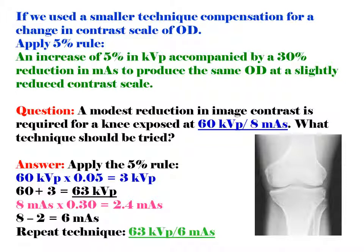Answer: Apply the 5% rule. 60 KVP multiplied by 0.05 equals 3 KVP; add to 60 KVP = 63 KVP. For MAS: 8 MAS multiplied by 0.30 equals 2.4 MAS, rounded to 2. So 8 minus 2 equals 6 MAS. The repeat technique is 63 KVP, 6 MAS.